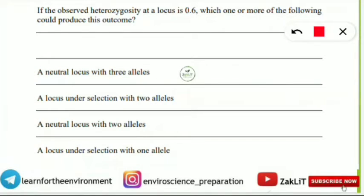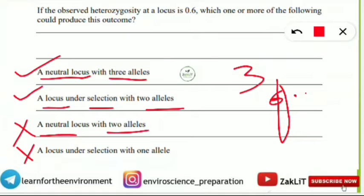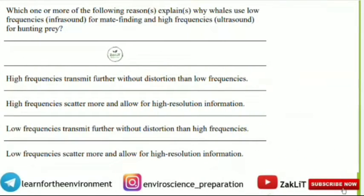The correct options are A and B. When a neutral locus has three alleles present, an observed heterozygosity of 0.6 can be the outcome. Similarly, if a locus is under selection with two alleles, there is a chance of this outcome. However, a neutral locus with two alleles will never give this heterozygosity value, and a locus under selection with one allele will also not give this value. You can ask in the comment section for a separate video on this concept.